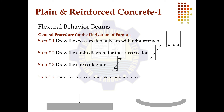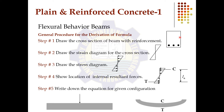Now for the flexural behavior of a beam, we will see how to derive the formula and the general procedure. First, we draw the cross-section and show the amount of reinforcement — the dotted portions represent the reinforcement bars in a rectangular section beam. Second, we draw the strain diagram. Third, we calculate the stress using the flexural stress formula: stress equals M·y over I. Then we show the internal resistance forces.